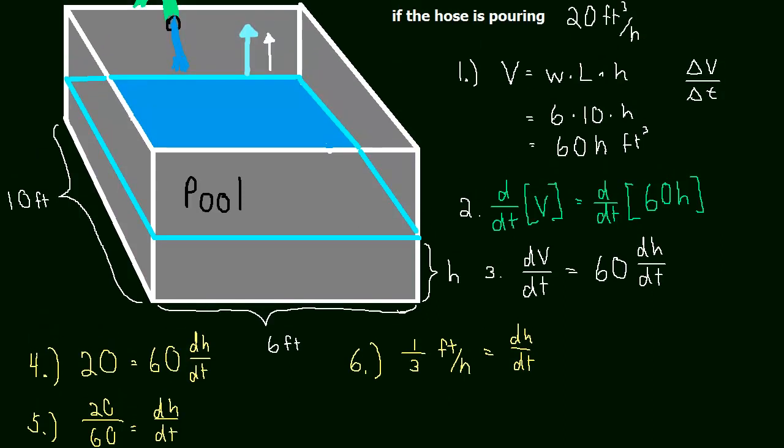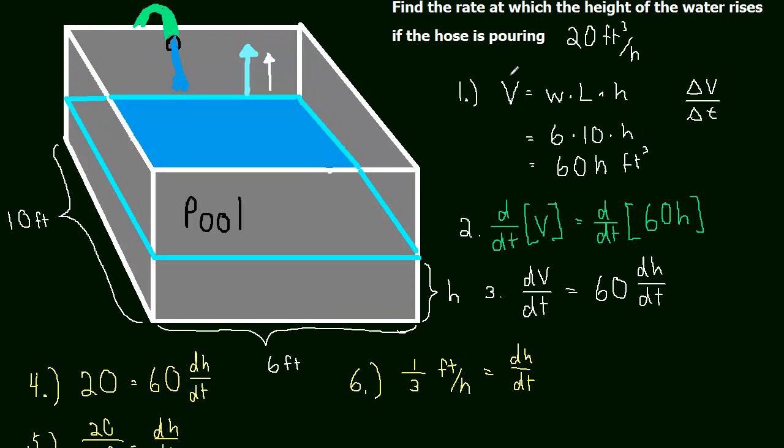So let's just recap because this is the first one we did. The first thing we did was we had to relate volume to height. That is going to be the most important step in all of these problems. Figuring out the proper relationship between the two things you're trying to relate. In our case, it was volume and height. So we figured out how volume is related to height. Then we took the derivative because we know we wanted the rate of change of the volume and the rate of change of the height. They gave us the rate of change of the volume that was given, and we had to figure out the rate of change of the height.